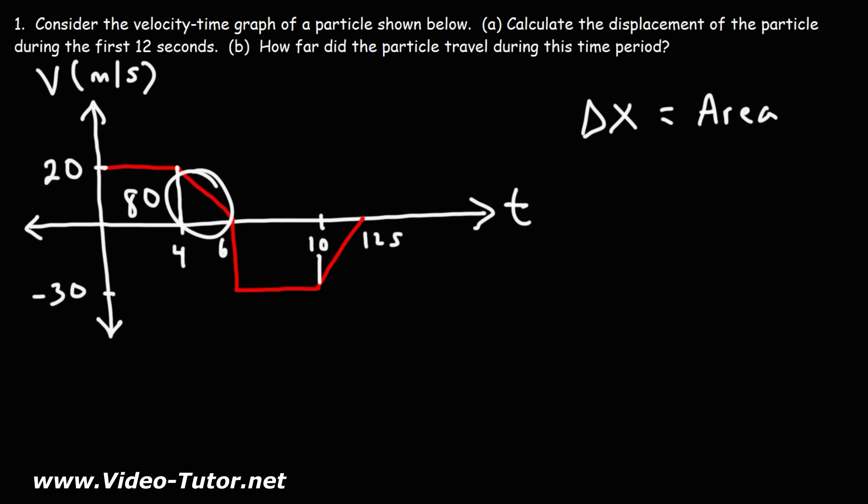Now for the triangle, we have the base and the height. The area of the triangle is 1/2 base times height. For this triangle, the length of the base is the difference between 4 and 6, so we have a base of 2, and the height of the triangle is 20. So half of 2 is 1 times 20. This is going to be 20.